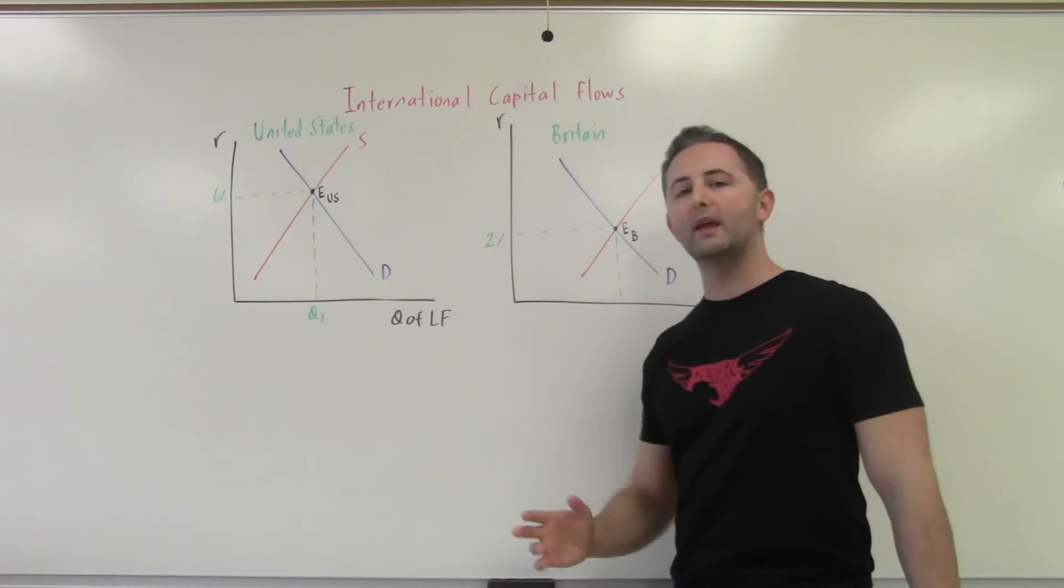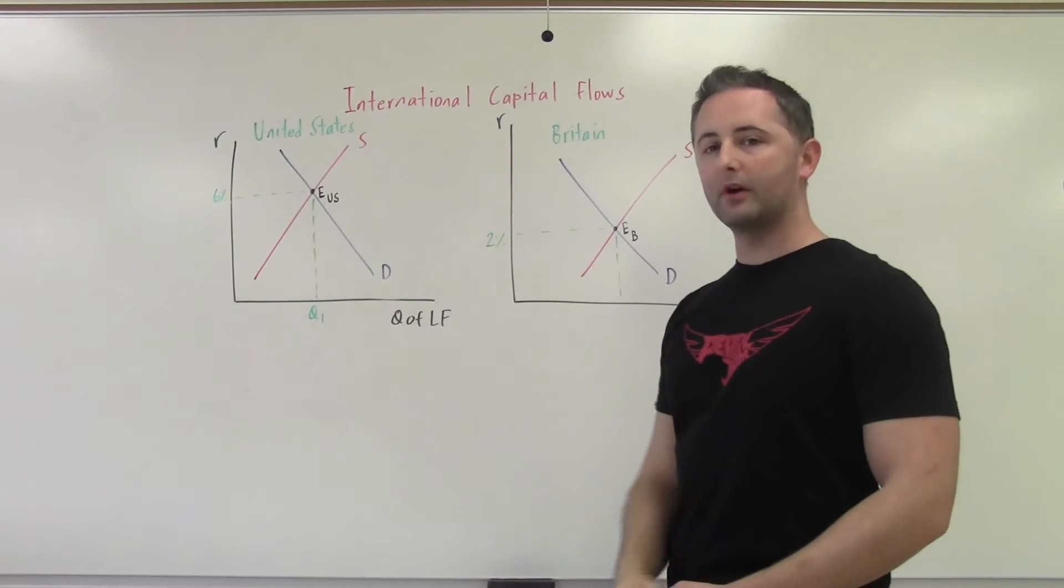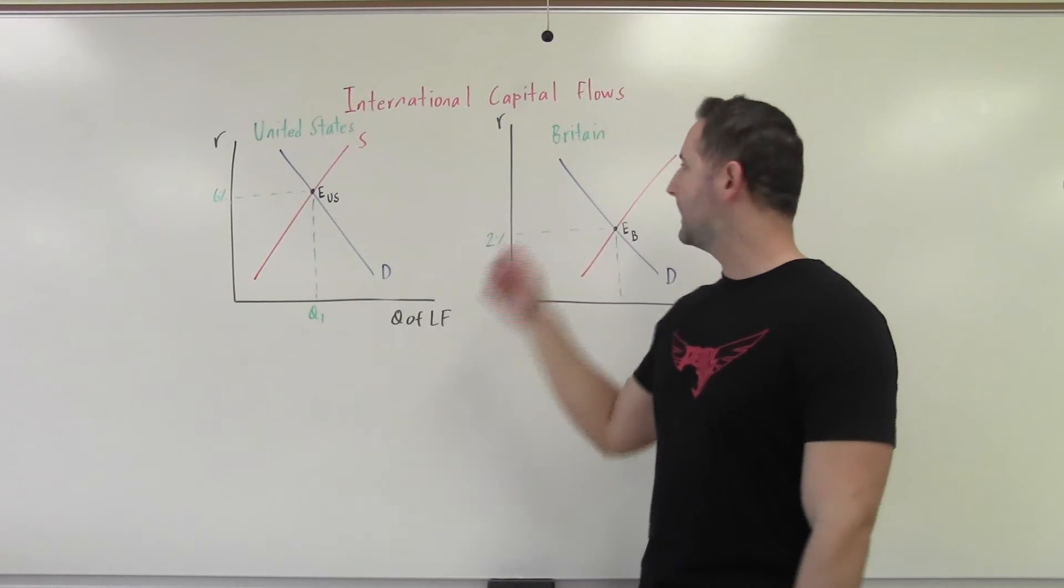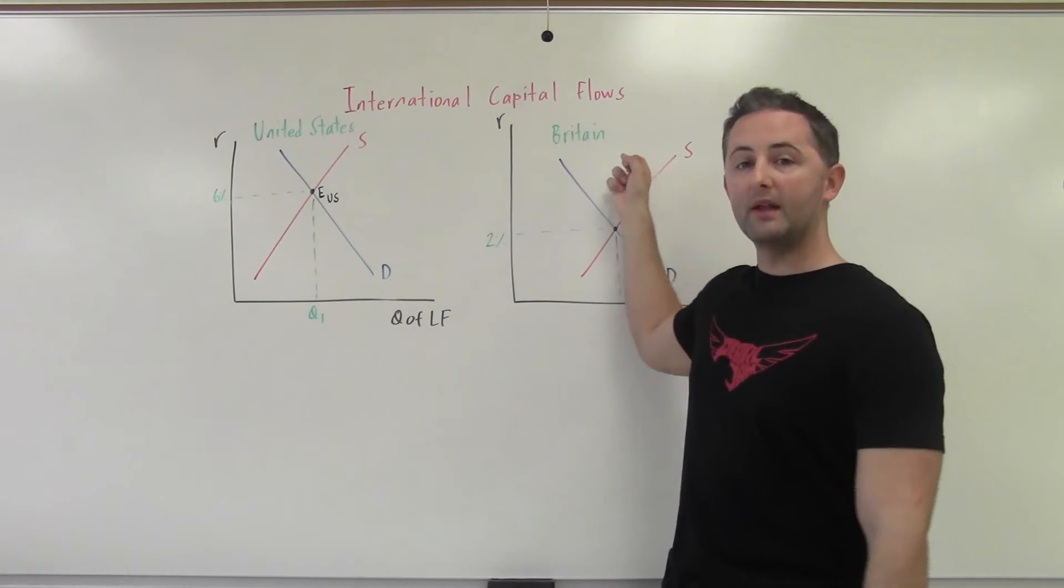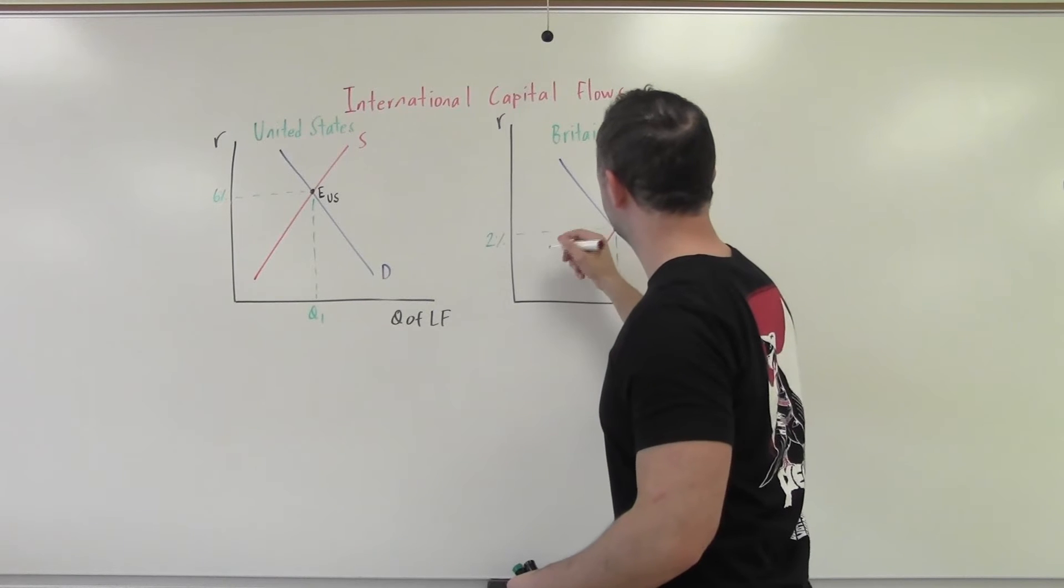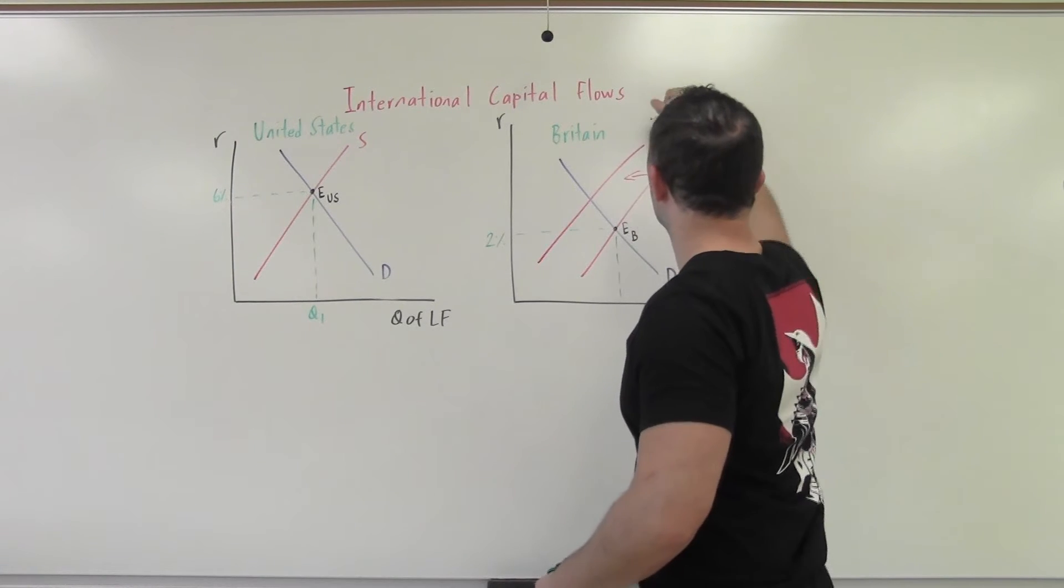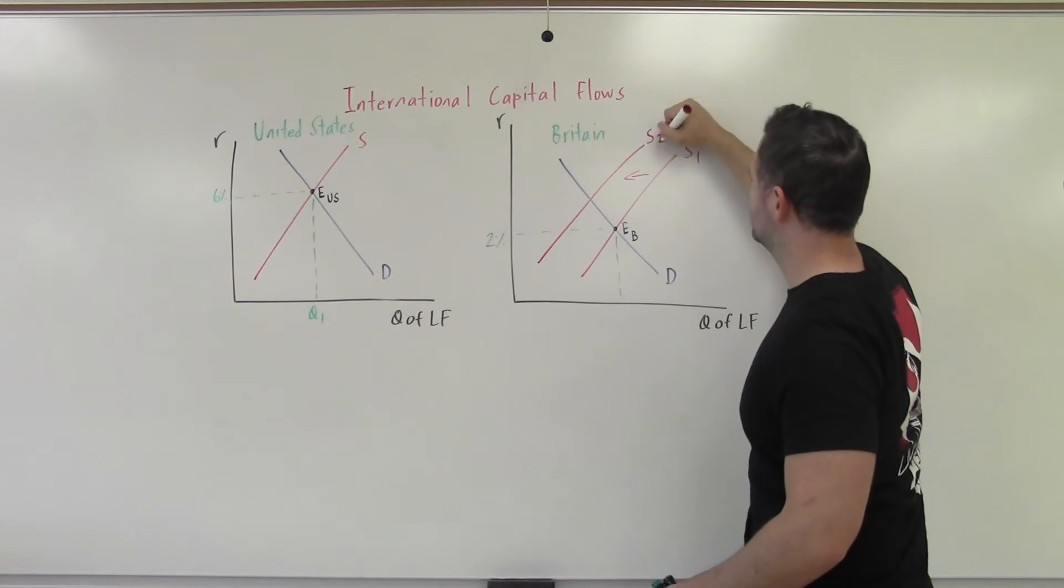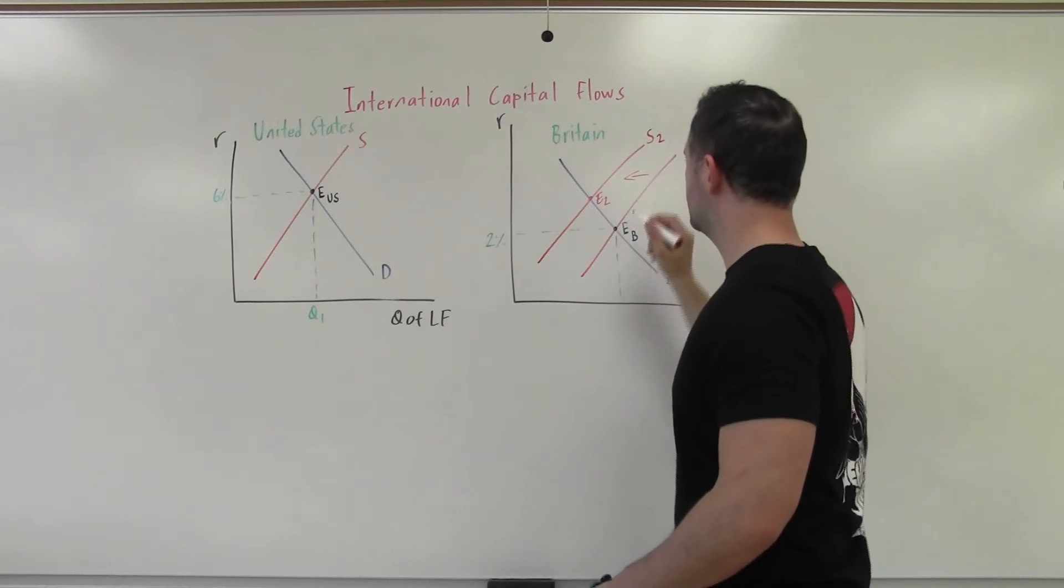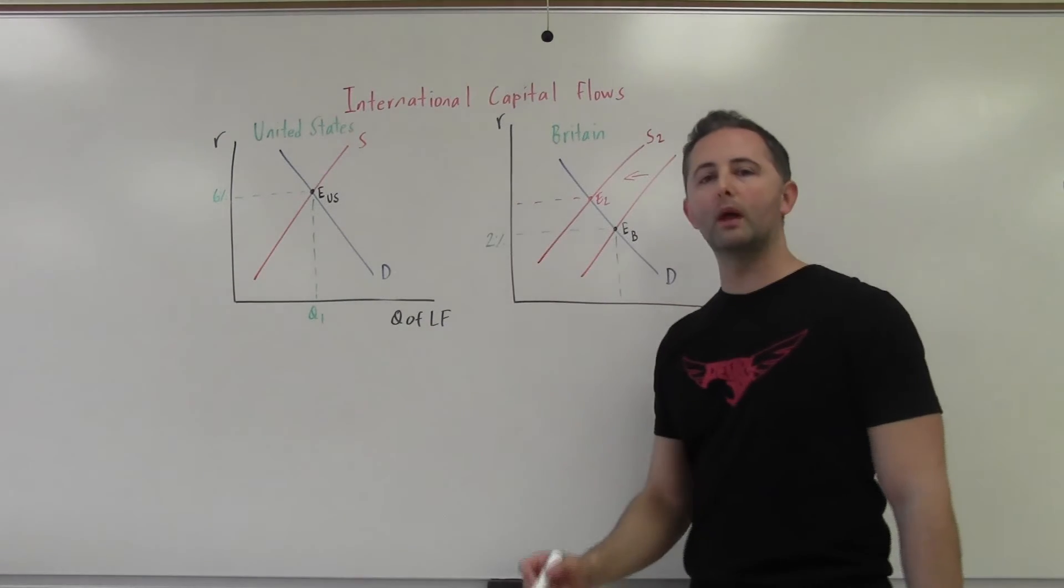So what we're going to see is two things happen. Because British investors would rather have their money in American banks, they're going to decrease the supply of loanable funds. It's going to shift to the left over here. So we're going to have a leftward shift in Britain. So we have now S1 and S2. Again, everything here is the same. There's nothing more complicated going on.